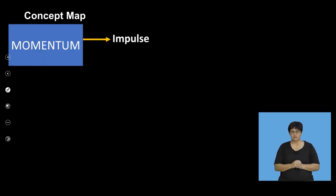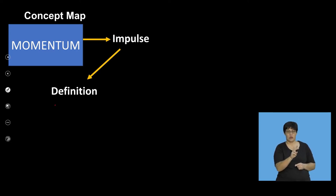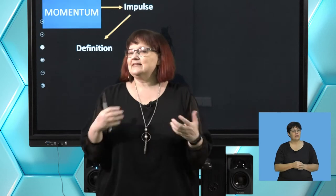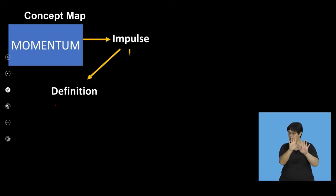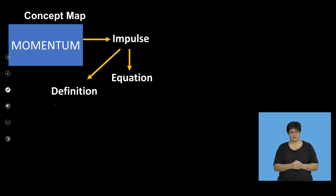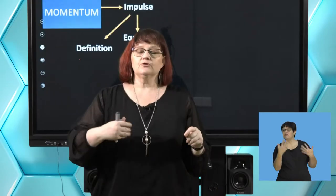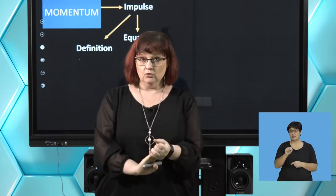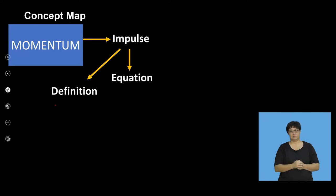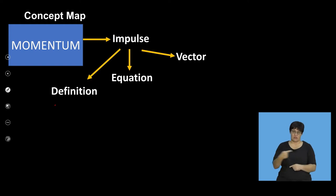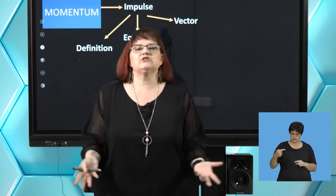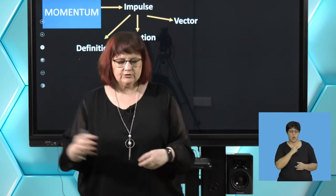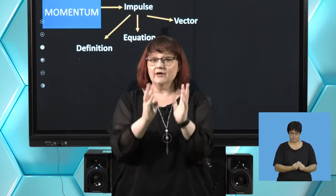We're looking at impulse in detail now. We're going to look at its definition — and its definition is a little strange because impulse is one of the only things you'd use at school that doesn't have its own symbol; it's a combination of symbols, which feels a little weird. Then we're going to look at the equation, which will look very familiar because it's very close to the equation we used when we looked at Newton's second law in terms of momentum. And of course we're going to deal with the fact that it's a vector — impulse is another vector, so we need to work out where we get the direction of impulse from.